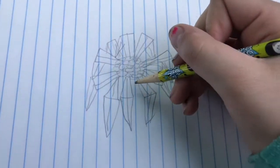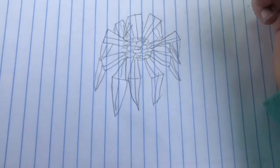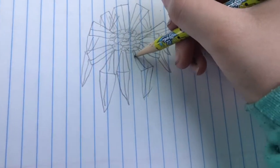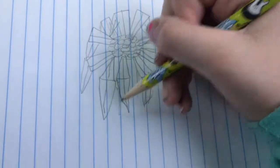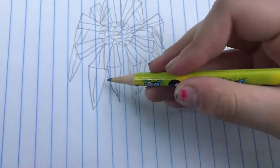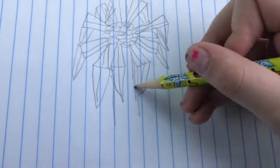Now we're going to be making the stem. Start in the middle of the flower and start going down. Try not to cut off any of your petals. Once you're about a quarter of the way down...